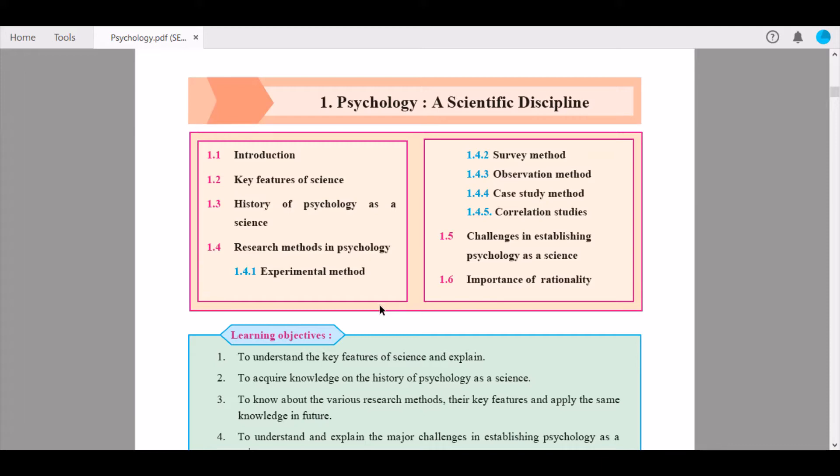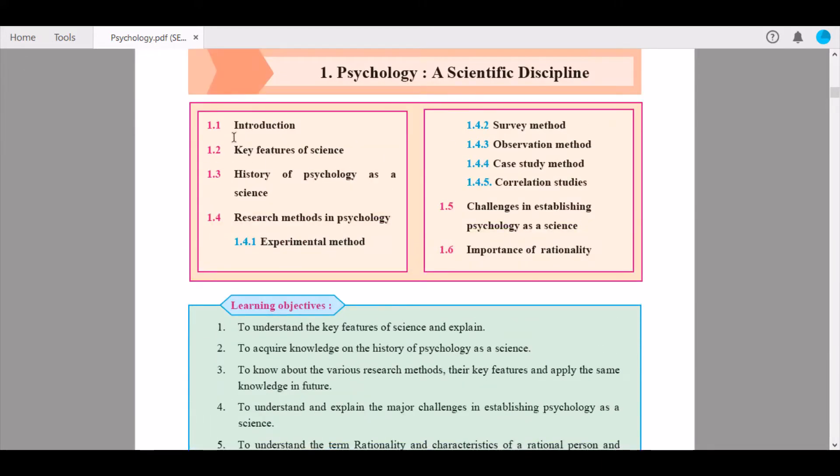Now we start with the first chapter, Psychology as a Scientific Discipline. Here are the key units: 1.1 Introduction, 1.2 Key Features of Science, 1.3 History of Psychology as a Science, 1.4 Research Methods in Psychology with sub-units including experimental method, survey method, observation method, case study method, and correlation studies, 1.5 Challenges in Establishing Psychology as a Science, and 1.6 Importance of Rationality.